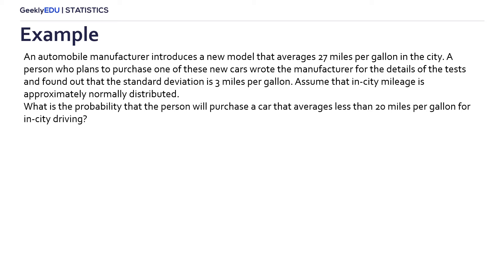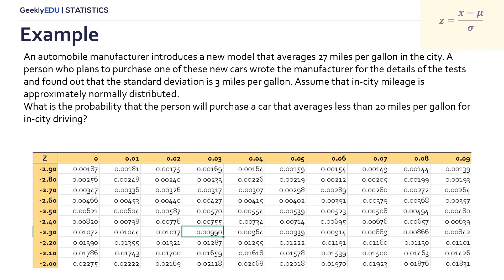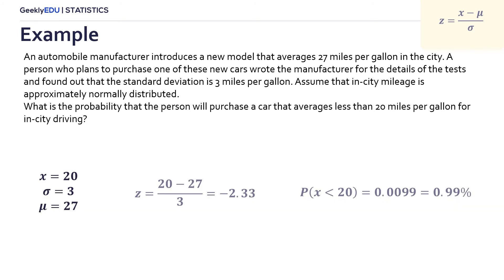We have to identify the variables from the problem. The score x is equal to 20 miles, the standard deviation is equal to 3, and the mean 27. Using the formula for the z-score, we obtain a score of minus 2.33. Consulting the value table, we get that the probability of getting this score is 0.99%. That probability is too low. I think that person will have to spend more money than he wanted in fuel.